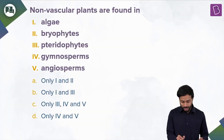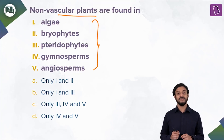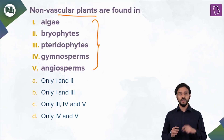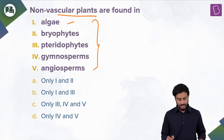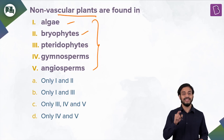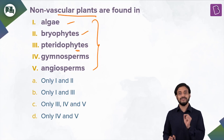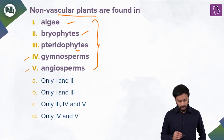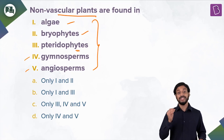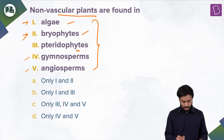Next question: nonvascular plants are found in which groups? The options include algae, bryophytes, pteridophytes, gymnosperms, and angiosperms — these are classifications of the plant kingdom. Algae are nonvascular. Bryophytes are nonvascular. Pteridophytes are vascular — they are the first group of plants with vascular tissues like xylem and phloem. So options one and two — algae and bryophytes — are correct.